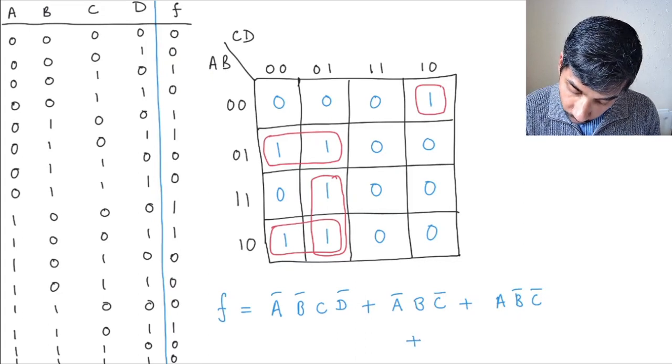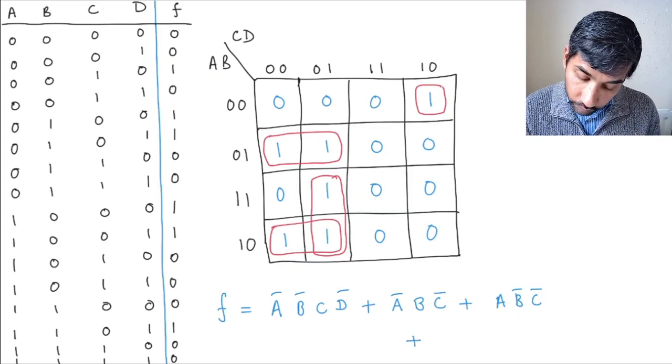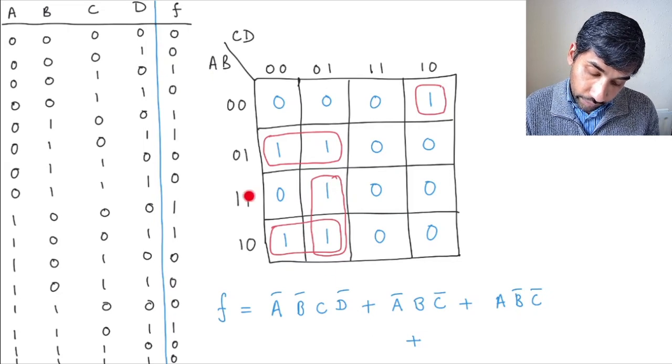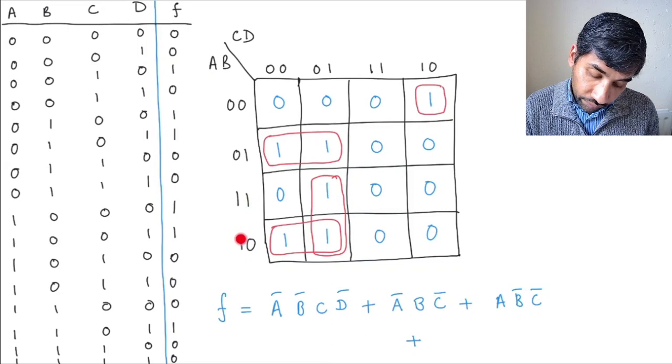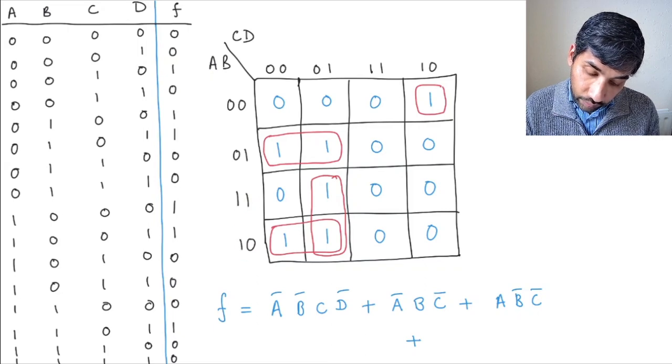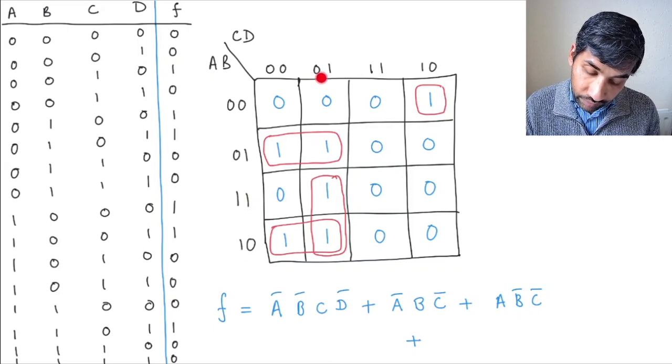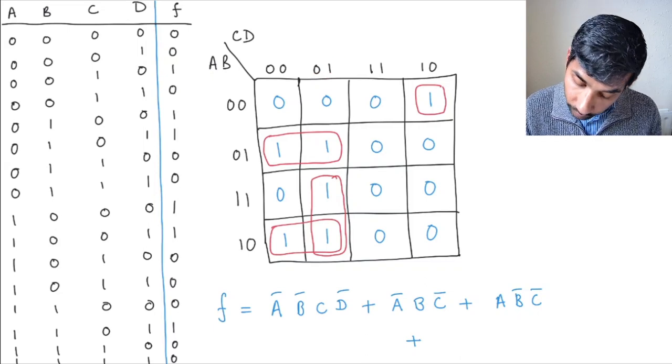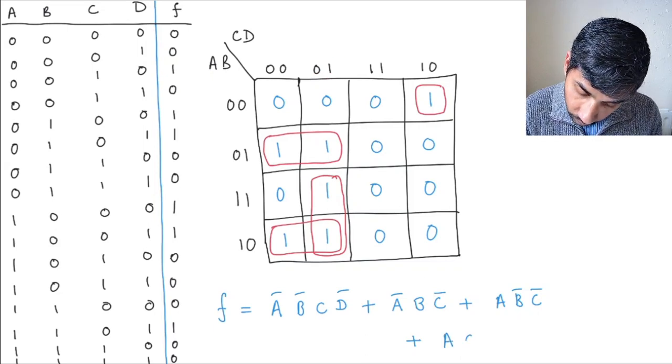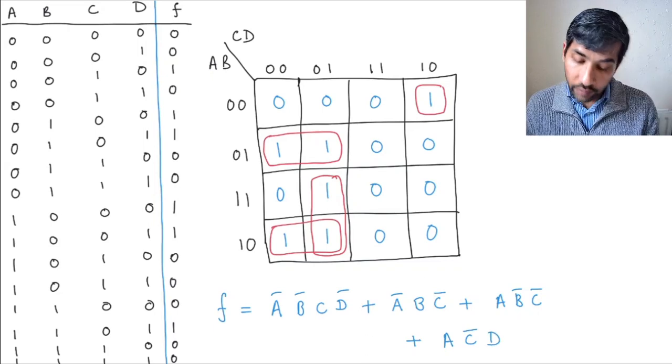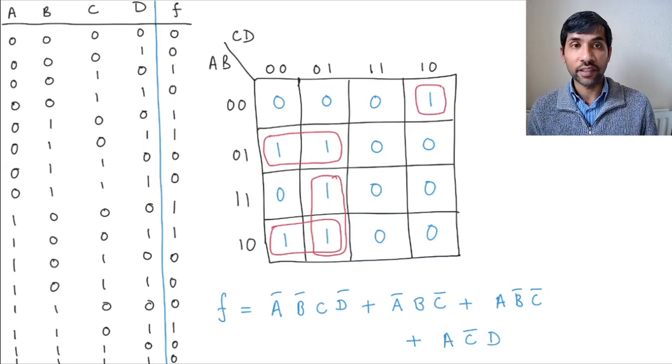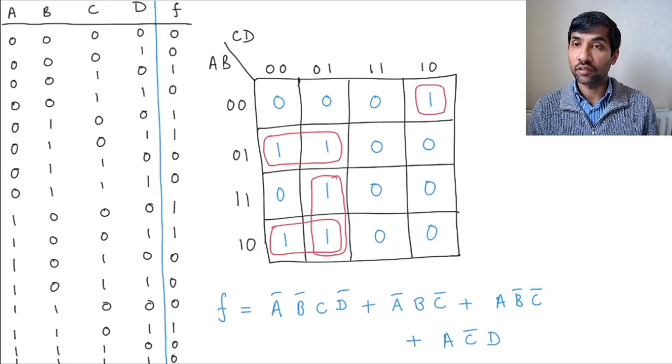And the last term that we'll have is this group of 1s here. So in this case, the term for B will disappear. You'll have A because A is 1, C-bar because C is 0, and D because D is 1. So you write A, C-bar, D, and this gives you the minimized Boolean expression corresponding to these truth tables.